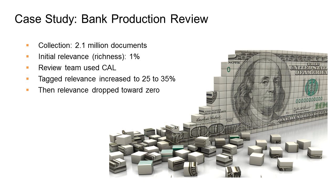They had the problem of having to review a lot of stuff to find a relatively small number of relevant documents. So, instead of the traditional linear review, they decided to use our continuous active learning process, which we call CAL. What happens is the team jumps in, starts reviewing, and the system's watching. As people are tagging, it looks for more relevant. Suddenly, the team's seeing 25%, 35% relevance. And that is actually a message that the system's working.